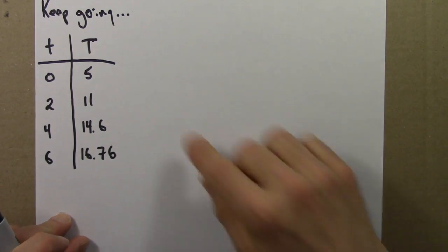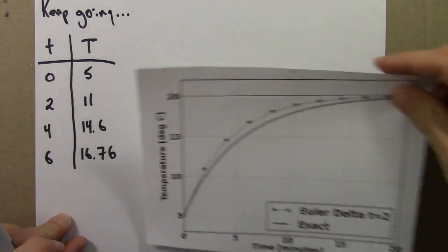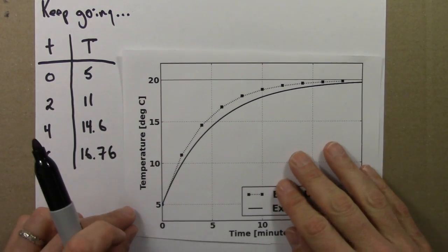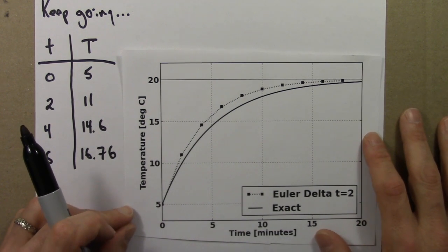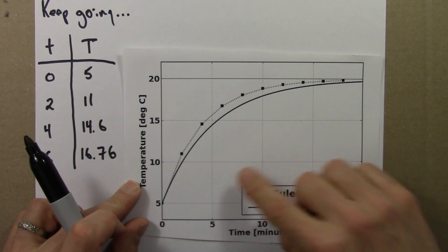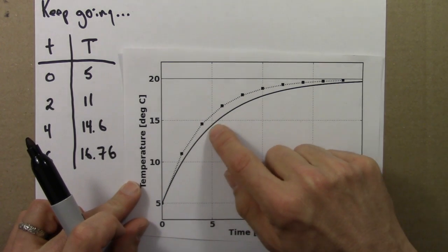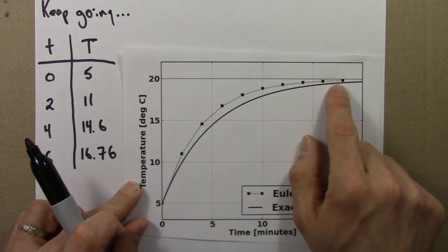So let's make a graph, let's make a plot of these numbers and see what it looks like, and compare it to the exact solution. So for this equation, it turns out one can use calculus to figure out an exact solution for this differential equation. And that's shown as this solid line here. Towards the end of this subunit, I'll talk a little bit about how one would get this solid line.